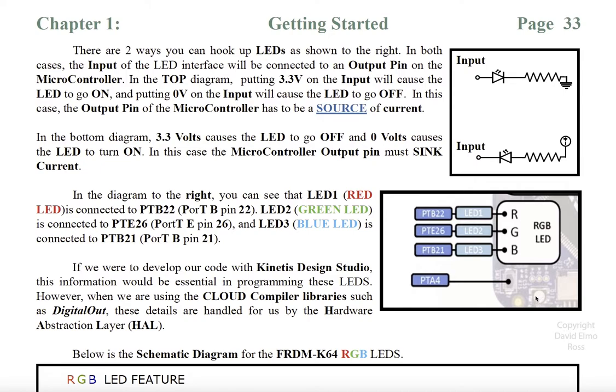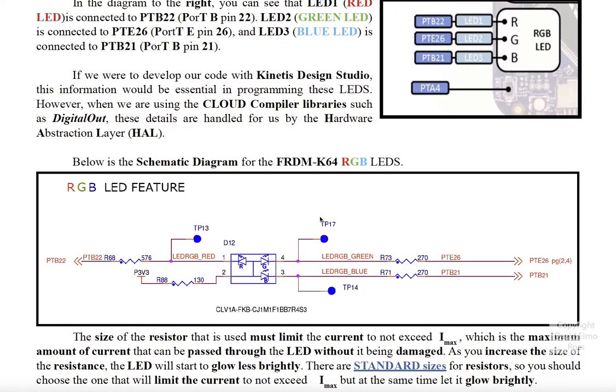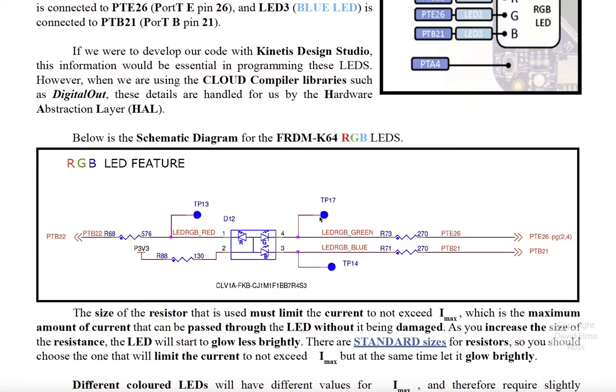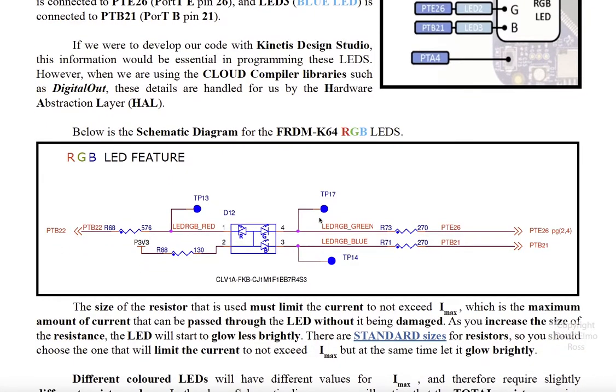Now, our RGB LED is here. If we were using something like Kinetis Design Studio to program these LEDs, we'd have to definitely know all of this information here in order to make sure we can turn on and off our various LEDs. However, our cloud compiler has a hardware abstraction layer, which means we don't need to have this information.